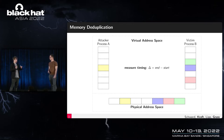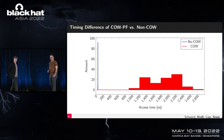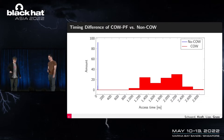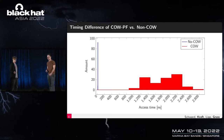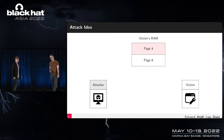Let's first look at the local timings. The blue bars are non-copy-on-write pages, and the red ones are copy-on-write accesses. Locally, they are easily distinguishable — there's a clear microsecond gap between the two distributions with nothing in between. This is very easy to distinguish; even a first-semester student could do it.